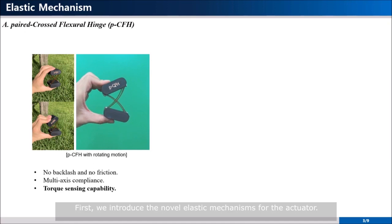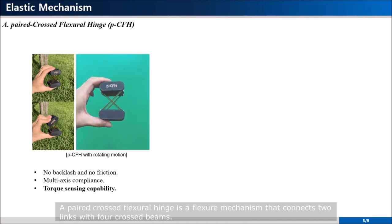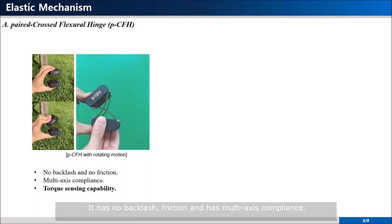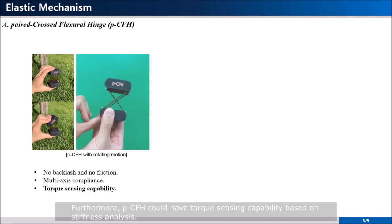First, we introduce the novel elastic mechanisms for the actuator. A paired-crossed flexor hinge is a flexor mechanism that connects two links with four crossed beams. It has no backlash friction and has multi-axis compliance. Furthermore, PCFH could have torque sensing capability based on stiffness analysis.